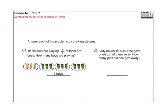Answer each of the problems by drawing pictures. 12 children are playing. 1 fourth of them are boys. How many boys are playing? So they drew a picture of a bunch of kids — you don't have to have pictures that are that detailed, of course. And then if a fourth of them are playing, we have to put these kids into four different groups. So we've got 1, 2, 3, 4 groups. And 1 fourth would be this part right here.